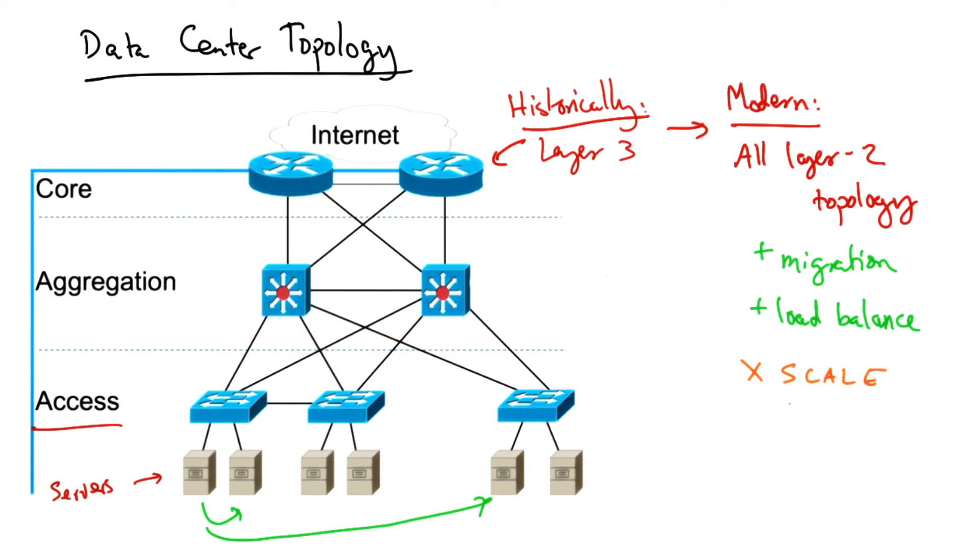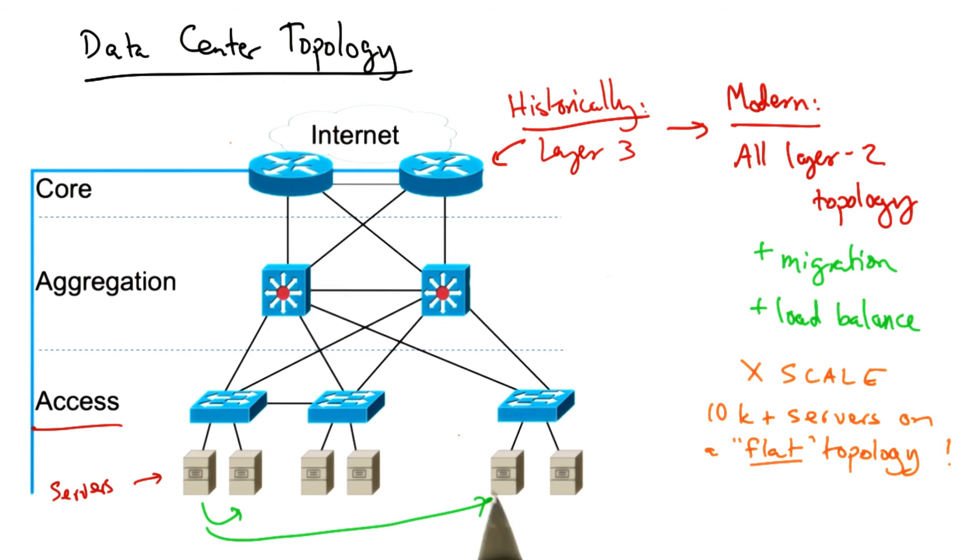On the other hand, a monolithic layer two topology makes scaling difficult, since now we have tens of thousands of servers on a single flat topology. In other words, layer two addresses are not topological, so the forwarding tables in these switches can't scale as easily because they can't take advantage of the natural hierarchy that exists in the topology.